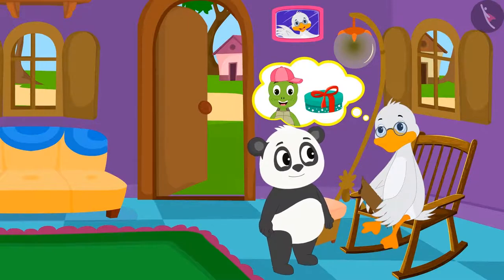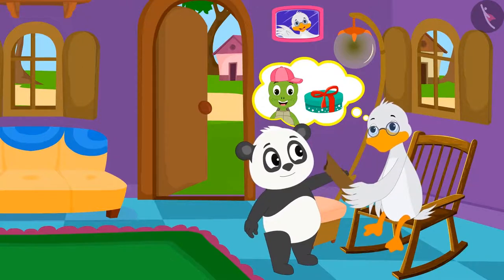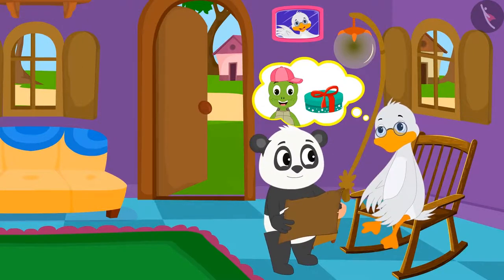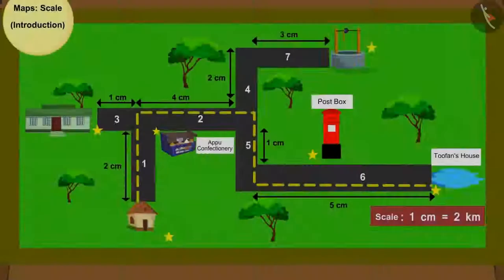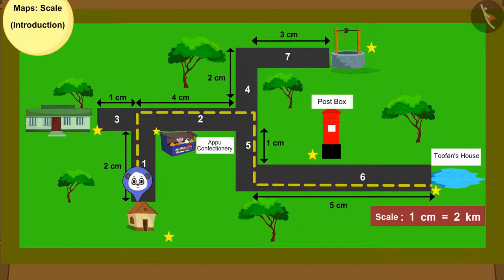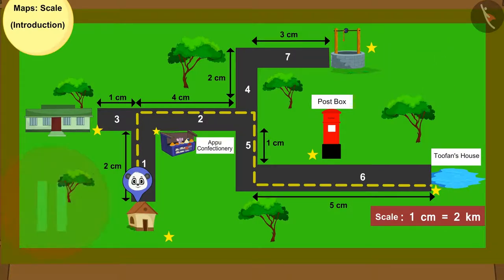Uncle gave Golu a map from his house to Tufan Tortoise's house, which was marked with a dotted line. Can you tell through which places will Golu pass on the way? If you want, you can find the answer to this question by pausing the video. Great kids! Your answer is absolutely correct.